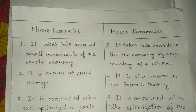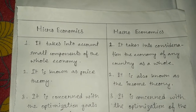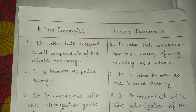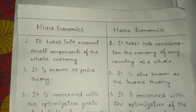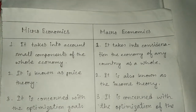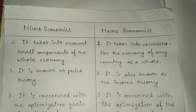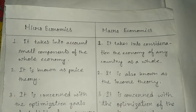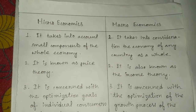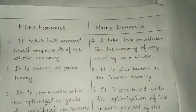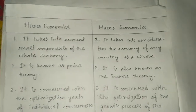Microeconomics takes into account small components of the whole economy. Macroeconomics takes into consideration the economy of any country as a whole. Microeconomics is known as price theory, while Macroeconomics is also known as the income theory.